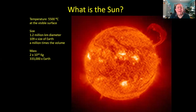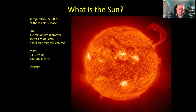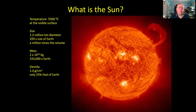In numbers, the mass is 2×10³⁰ kilograms—a number you can't really get your brain around. That's 333,000 times the mass of the Earth, which tells us something about the density. With it being a million times the volume but only 300,000 times the mass, the average density is around 1.4 grams per cubic centimeter—only a little more than the density of water, which is one gram per cubic centimeter.